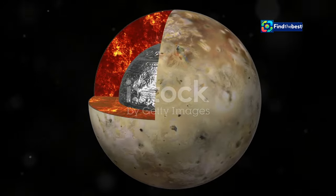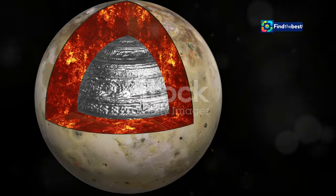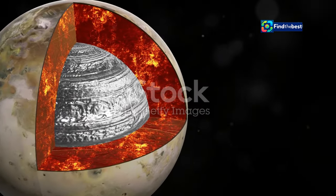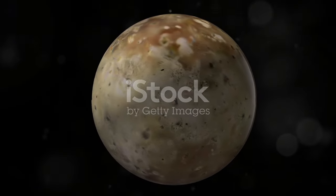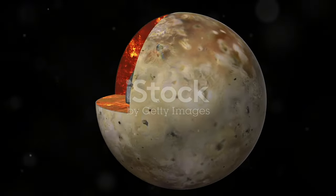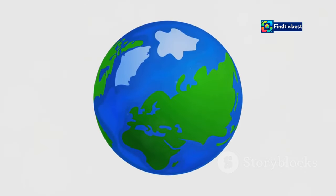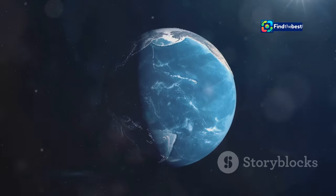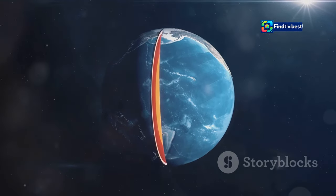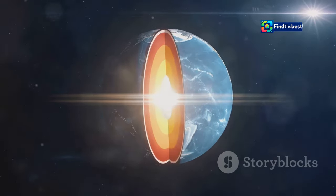To understand why the magnetic north pole is moving, we need to journey to the center of the Earth. Deep below our feet lies a solid inner core surrounded by a liquid outer core. This outer core is made up mostly of iron and nickel. The intense heat of the Earth's interior drives convection currents in the liquid outer core.